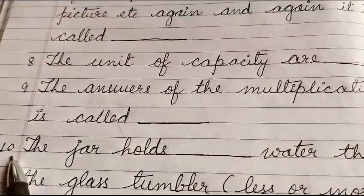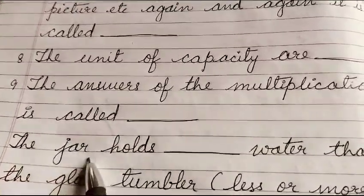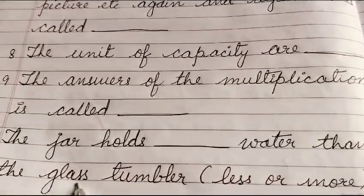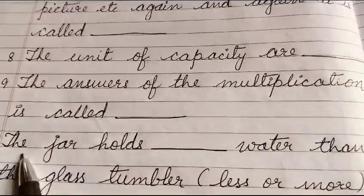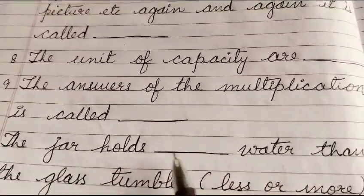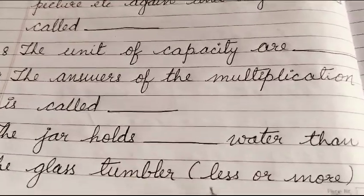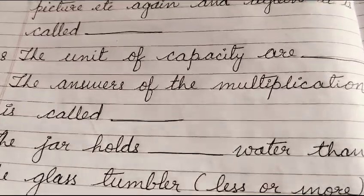Question number 10: The jar holds dash water than the glass tumbler. Options are given here: Less or more.